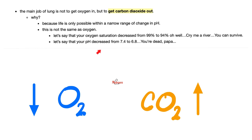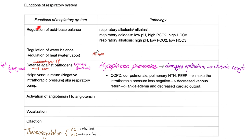Life is only possible within a very narrow range of pH change. Functions of the respiratory system: regulation of acid-base balance. Carbon dioxide is an acid — CO₂ plus water gives you carbonic acid. If you accumulate carbon dioxide in your blood, you get respiratory acidosis, which can kill you. If you keep removing carbon dioxide, you get respiratory alkalosis, which can also kill you. If you have more acid, you have acidosis; if the acid is leaving, you have alkalosis.